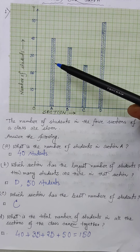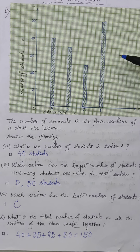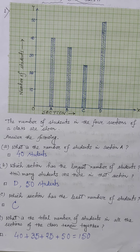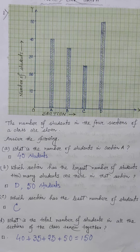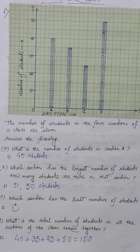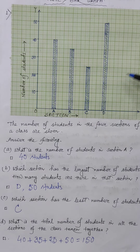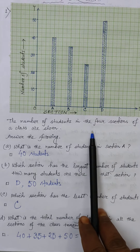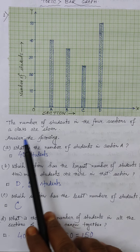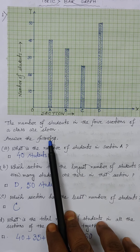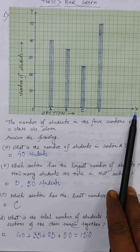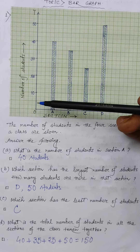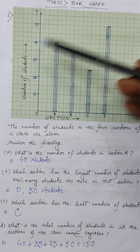Today we are doing the first part — that is when a graph will be given and some questions will be given, and we have to solve the questions by the help of the graph. In this question, the number of students in the four sections of a class are shown. You can see the x-axis or horizontal axis represents the section, and the y-axis or vertical axis represents the number of students.